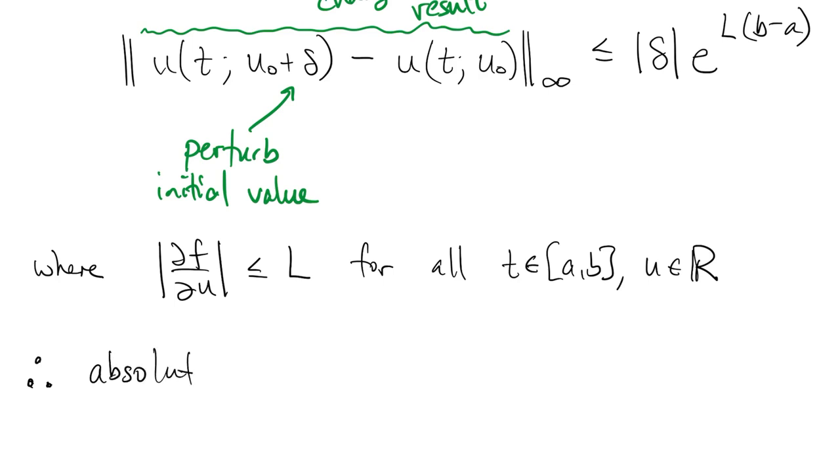L is some upper bound of the partial derivative of the function f with respect to its U argument. Now, the theorem says that the absolute condition number of the initial value problem is e to the L times B minus A.